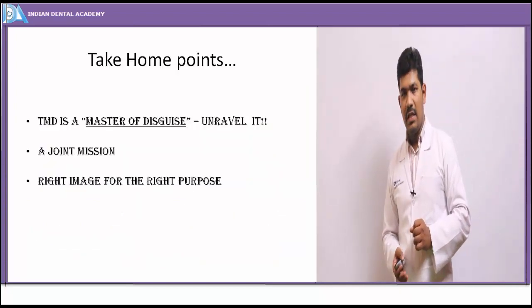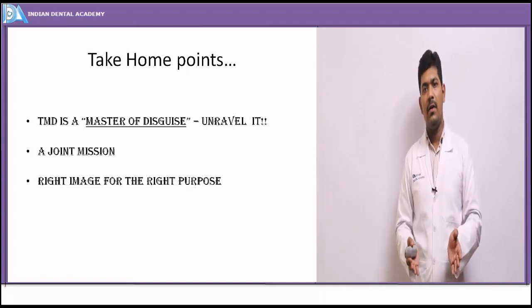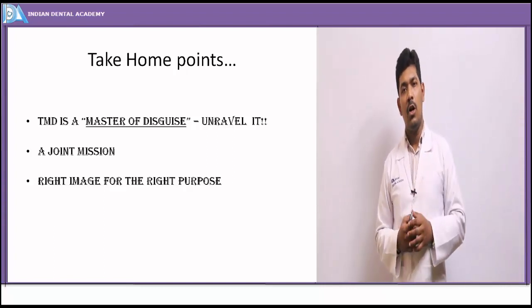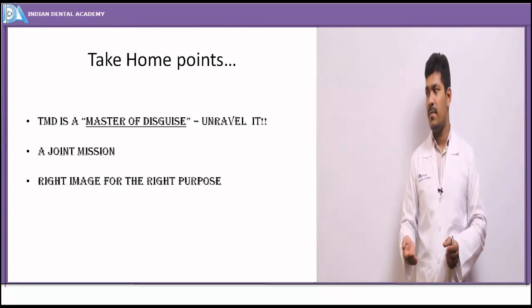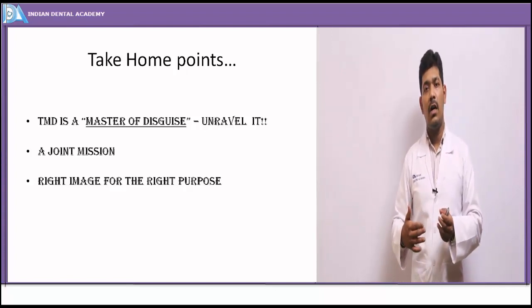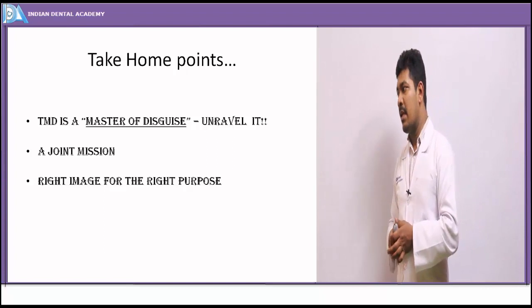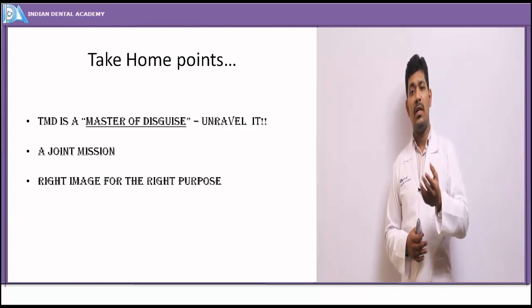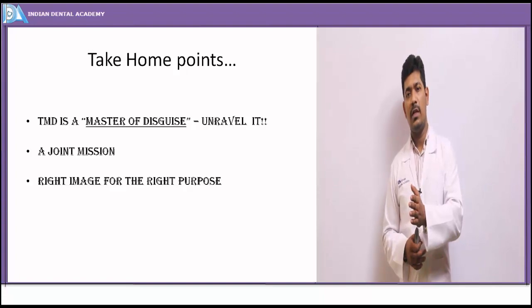In summary, the TMJ complex is a unique and complex entity wherein musculatures, ligaments, hard tissue, and soft tissue all play important roles in normal functioning. Apart from clinical signs and symptoms, the physician must use radiological imaging modalities to pinpoint the exact problem, arrive at a specific diagnosis, and treat the patient accordingly. Depending on whether hard tissue or soft tissue imaging is needed, and which portion of the TMJ complex is to be viewed, the right kind of imaging modality must be selected. Thank you.